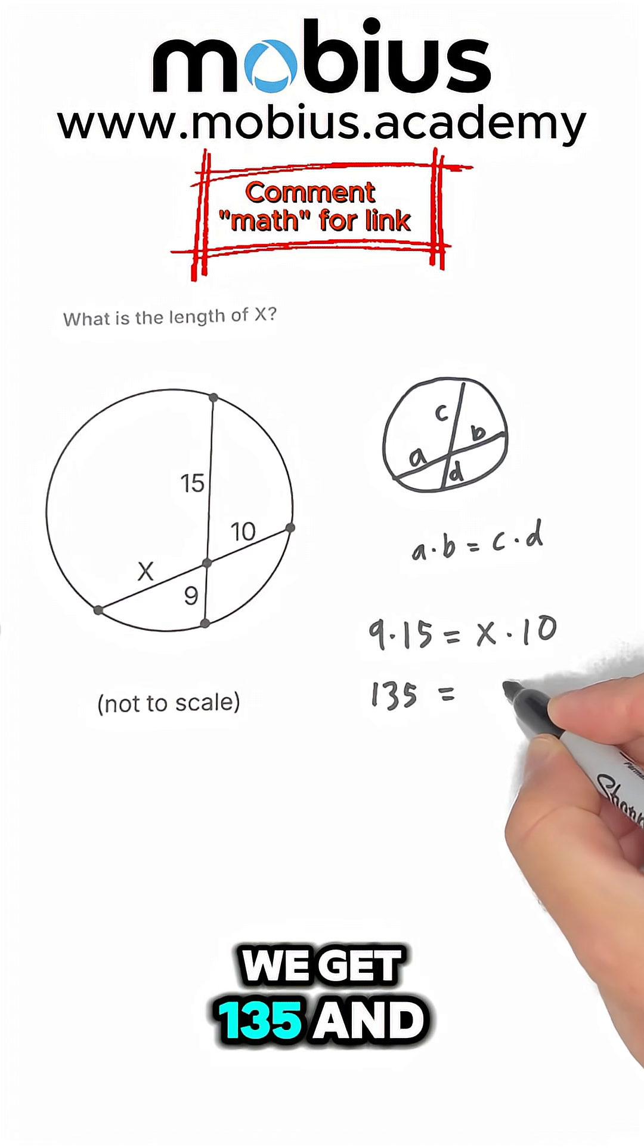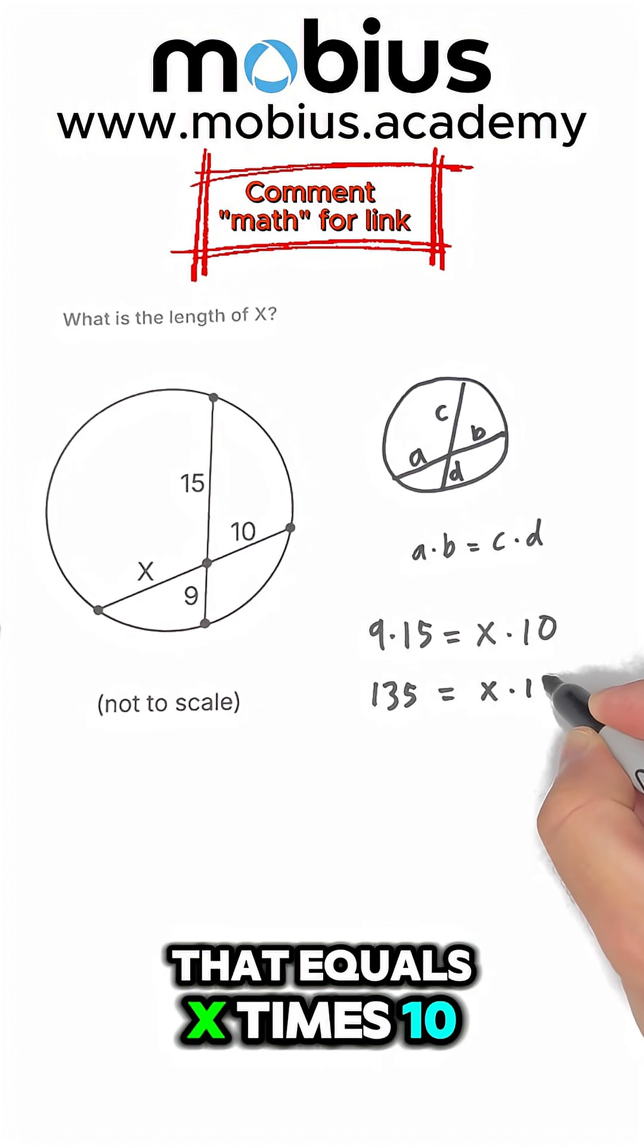And if we multiply 9 times 15, we get 135, and that equals x times 10.